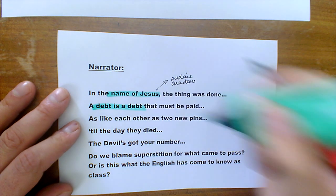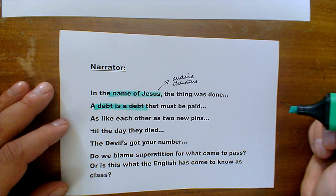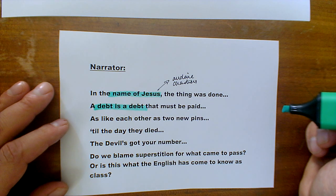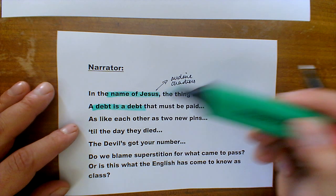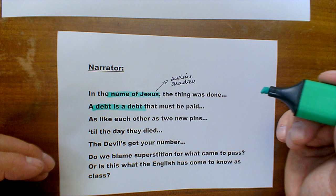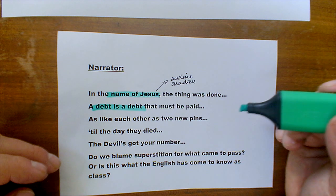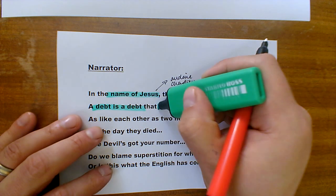He says 'a debt is a debt that must be paid.' Willie Russell reminds us through the narrator that there are consequences to our actions — things that we do we will have to pay for, shown very literally with Mrs. Johnston and her inability to pay for possessions from the catalogue or even milk for her children, but also in a symbolic sense: the emotional and moral decisions we make will have ramifications and consequences later down the line, and they must be paid.